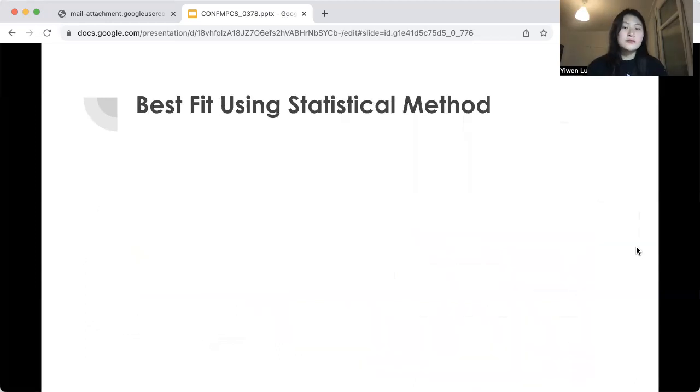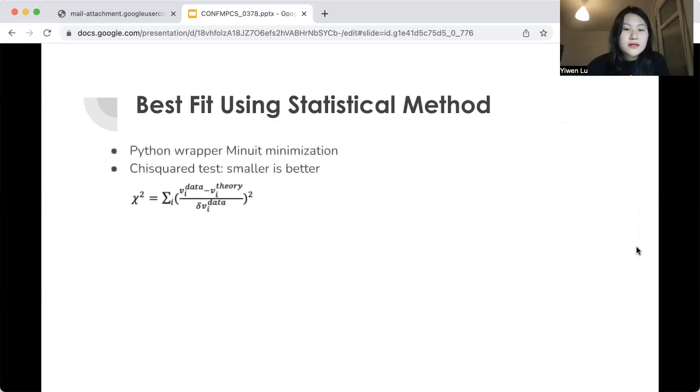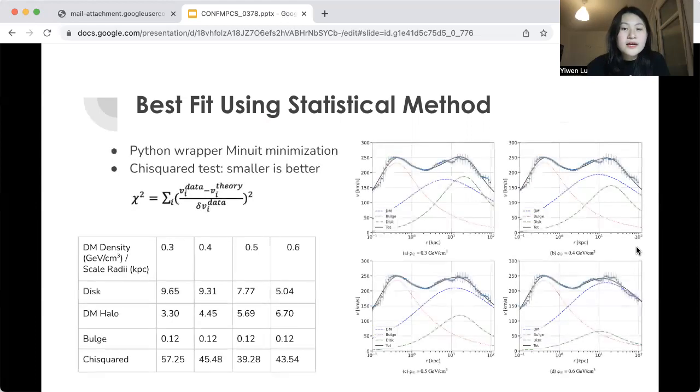And for the final part of our study, we similarly fitted the equations for the three galactical components, but this time using the Python wrapper Minuit for the chi-square test, which is used in statistics. It's a numerical evaluation of how close a fit is and the smaller the result, the better. By increments of 0.1, we implemented the same program for each rho value, with the chi-square test being the smallest when rho was equal to 0.5, with chi-square being 39.28, as shown here in the table. And also here in the graph at right, the closest fit is when rho is equal to 0.5.